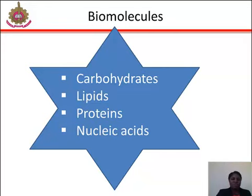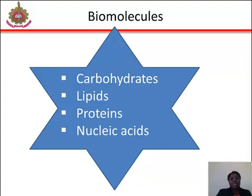Lipids are usually made from one molecule of glycerol combined with other molecules. In triglycerides, the main group of lipids, there is one molecule of glycerol and three fatty acids. Proteins are very large molecules — macromolecular polymers made from monomers called amino acids. There are 20 standard amino acids, each containing a carboxyl group, an amino group, and a side chain. When amino acids combine, they form a special bond called a peptide bond through dehydration synthesis, becoming a polypeptide or protein.